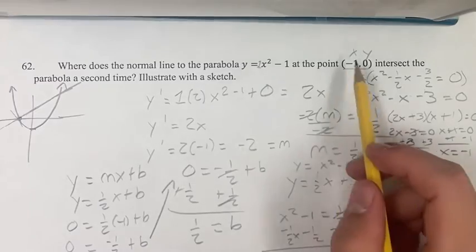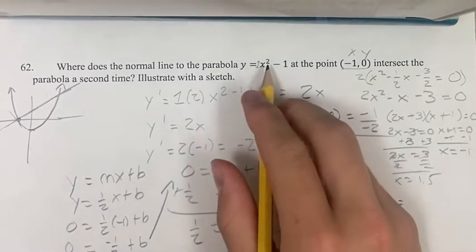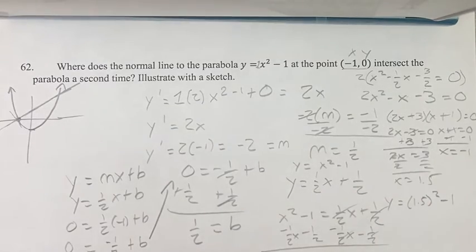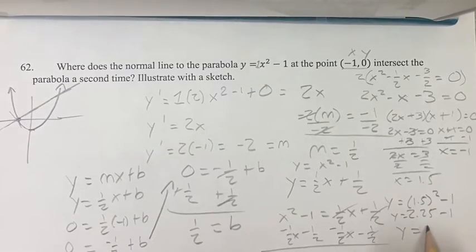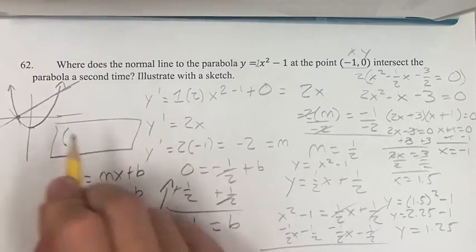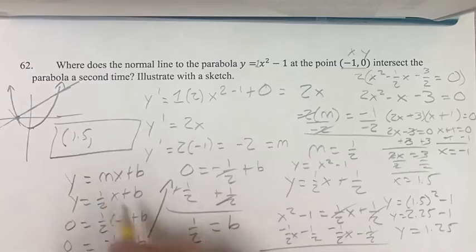Now we have to find the y value because we have to find the analogous point. So y equals x squared minus 1, so 1.5 squared minus 1. y is equal to 1.5 squared is 2.25 minus 1. y is equal to 1.25. So this point, which is your final answer, the x is 1.5, and the y is 1.25.